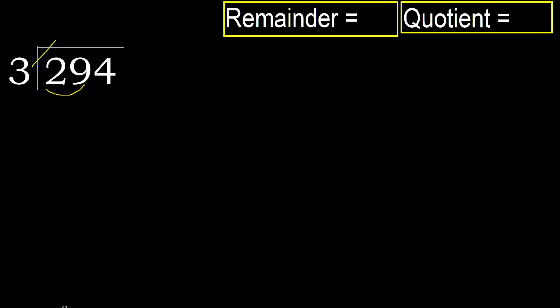3 multiplied by which number is nearest to 29, but not greater? 3 multiplied by 9 is 27, which is not greater. Ok. Subtract, next.